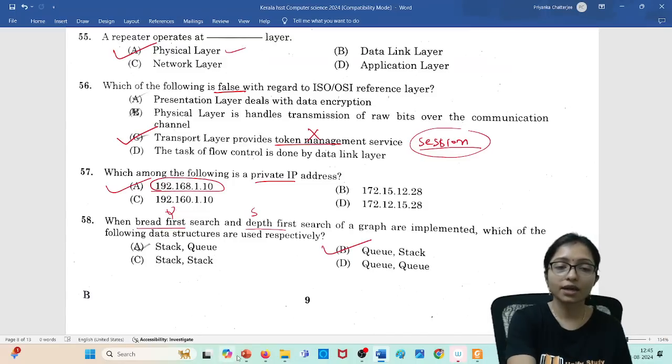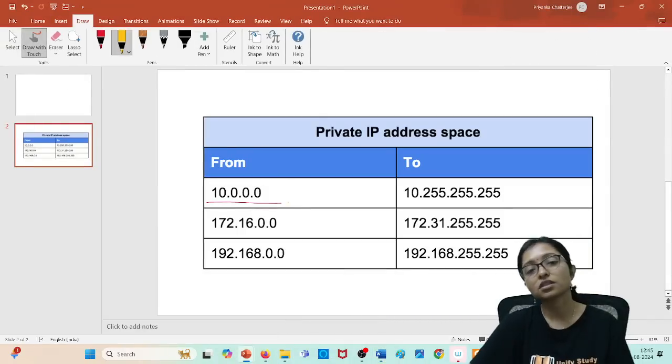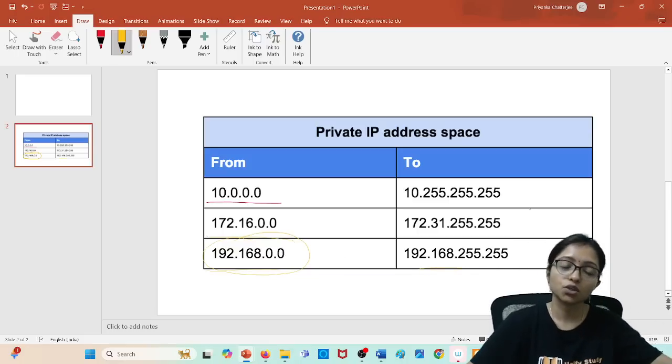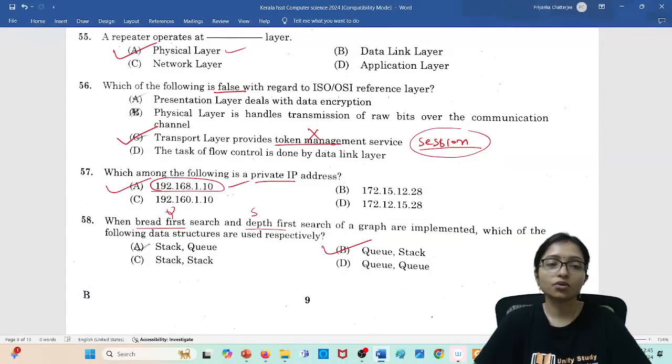Private IP range: this is the correct answer, 192.168, because the range of the private IP address is this one. The range, because one is this one, this one, and this one. So according to that, 192.168.0.0 to 192.168.255.255. So this will be coming according to the correct range. So this is your answer.